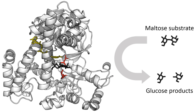In many organisms, inhibitors may act as part of a feedback mechanism. If an enzyme produces too much of one substance in the organism, that substance may act as an inhibitor for the enzyme at the beginning of the pathway that produces it, causing production of the substance to slow down or stop when there is sufficient amount. This is a form of negative feedback. Major metabolic pathways such as the citric acid cycle make use of this mechanism. Since inhibitors modulate the function of enzymes, they are often used as drugs. Many such drugs are reversible competitive inhibitors that resemble the enzyme's native substrate, similar to methotrexate. Other well-known examples include statins used to treat high cholesterol, and protease inhibitors used to treat retroviral infections such as HIV. A common example of an irreversible inhibitor used as a drug is aspirin, which inhibits the COX-1 and COX-2 enzymes that produce the inflammation messenger prostaglandin. Other enzyme inhibitors are poisons; for example, the poison cyanide is an irreversible enzyme inhibitor that combines with the copper and iron in the active site of the enzyme cytochrome C oxidase and blocks cellular respiration.